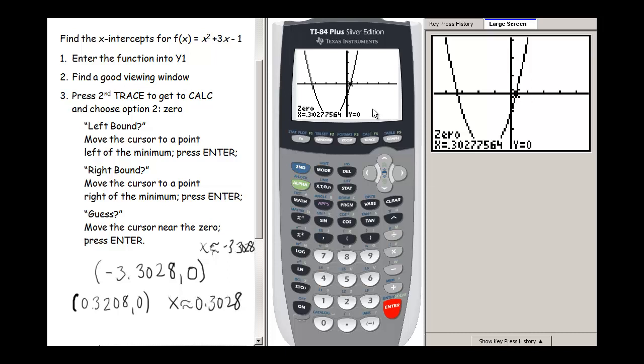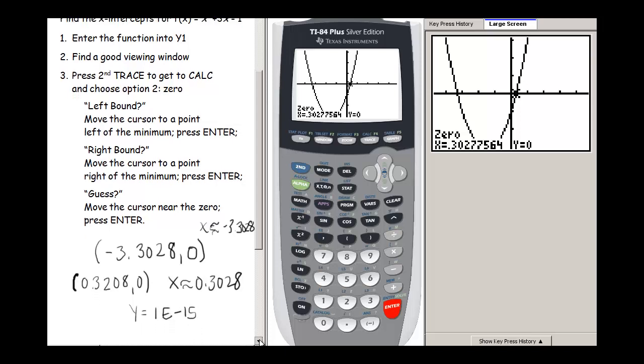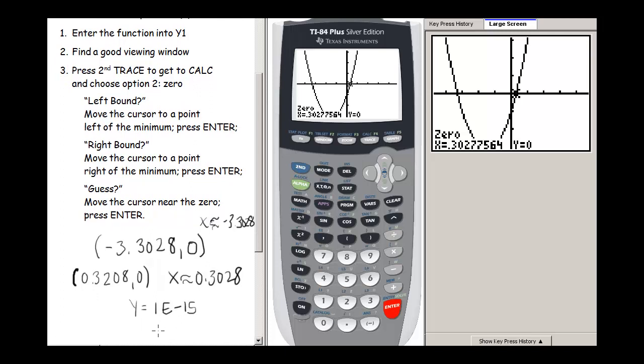Now one thing to note is sometimes when it says y = 0 here, sometimes it'll say something like y = 1E-15. That's the calculator's shorthand for scientific notation, which means 1 × 10^-15, which is really, really close to zero.